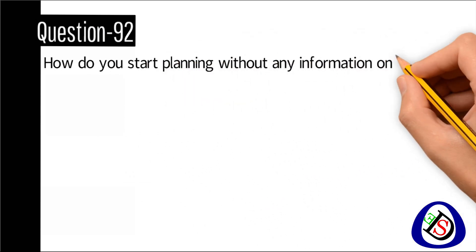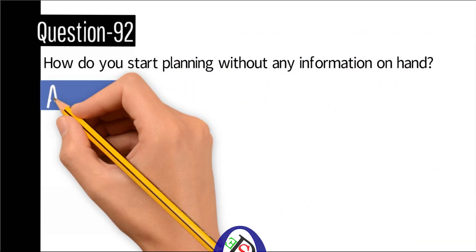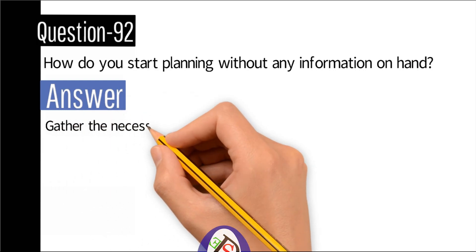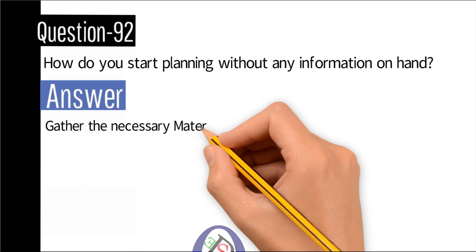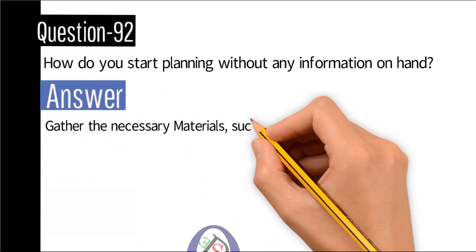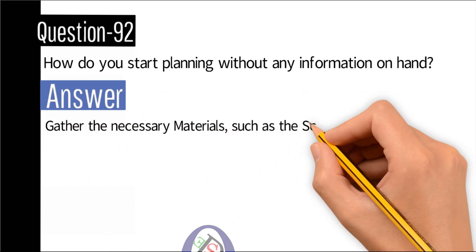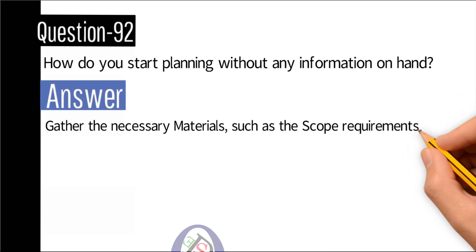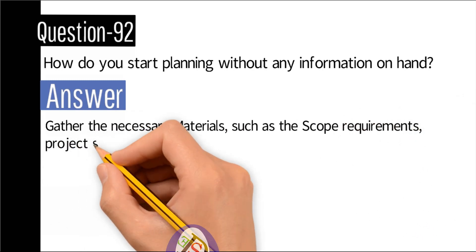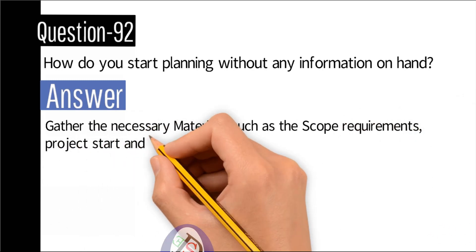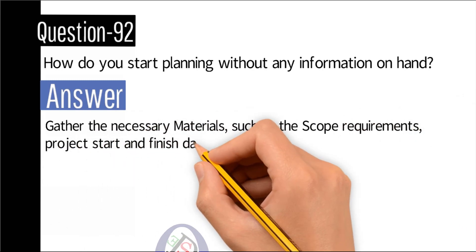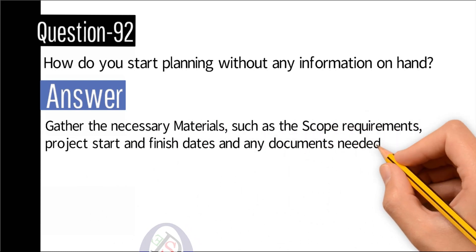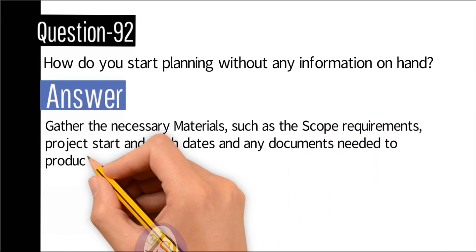Question number 92: How do you start planning without any information on hand? Answer: Gather the necessary materials such as the scope management, scope requirements, project start and finish dates, and any documents needed to produce project objectives.